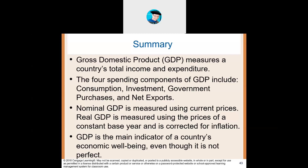To summarize: the spending components of GDP include consumption, investment, government purchases, and net exports — that's the formula to calculate gross domestic product. Nominal GDP uses current prices; real GDP uses a base year's price, which accounts for inflation. GDP is a factor of economic well-being, but it's not perfect.